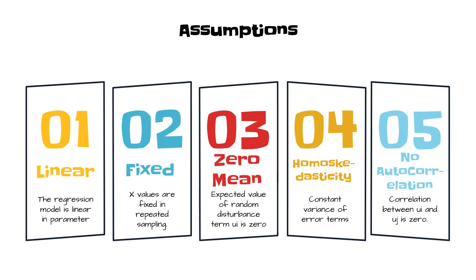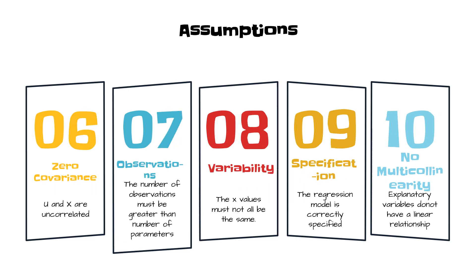To summarize the ten assumptions: first, the model should be linear in parameters; second, x values should be fixed in repeated sampling; third, the zero mean expected value of the random disturbance term ui equals zero; fourth, homoscedasticity — constant variance of error terms; fifth, no autocorrelation — the correlation between ui and uj is zero; sixth, zero covariance — u and x are uncorrelated. The seventh assumption concerns the number of observations, which should be greater than the number of parameters to be estimated.